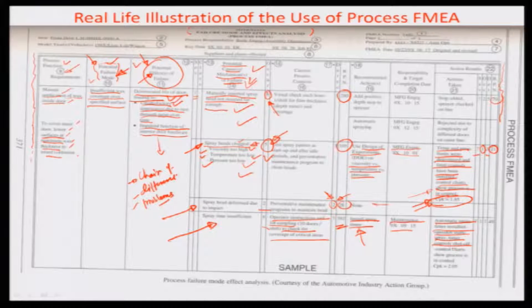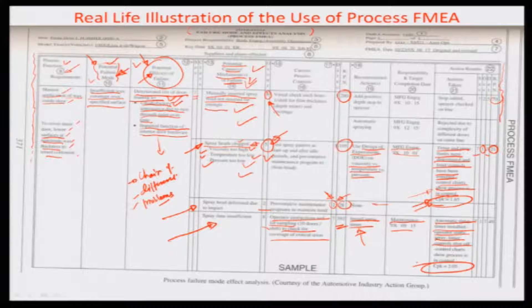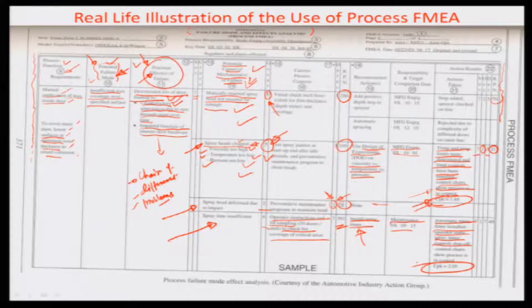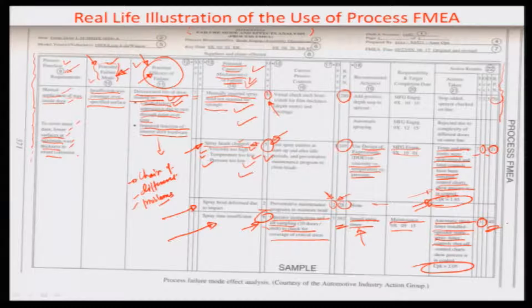A control chart was plotted and showed a CPK value of 2.05, which is reasonably good. The occurrence of this defect, which had been 80 percent earlier, reduced to about 10 percent, and the RPN reduced from 392 to 49.